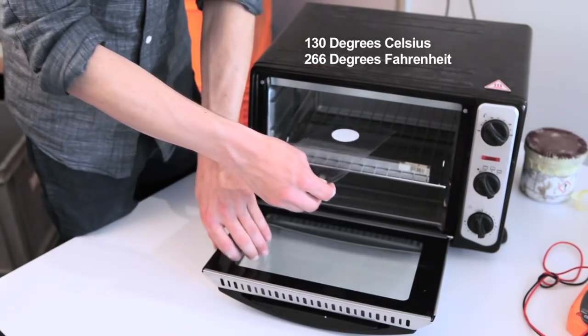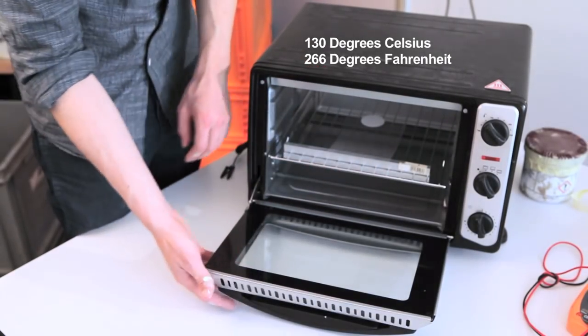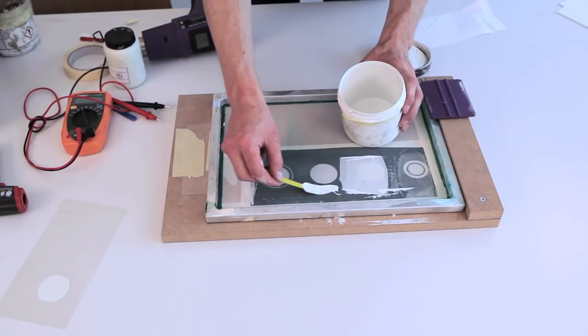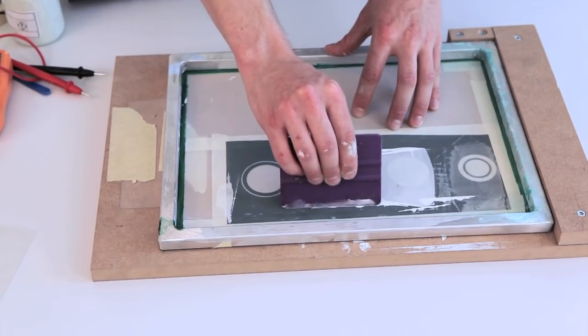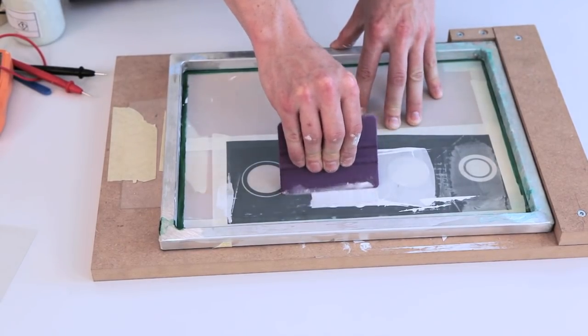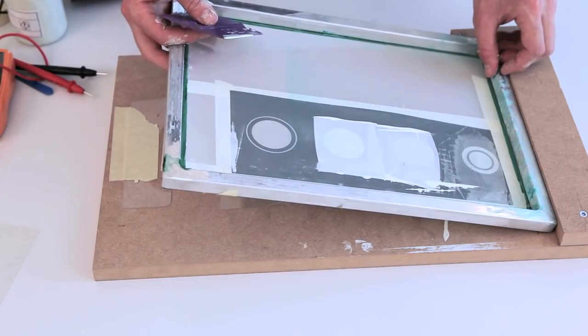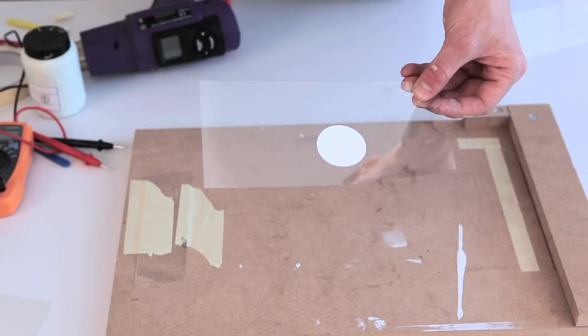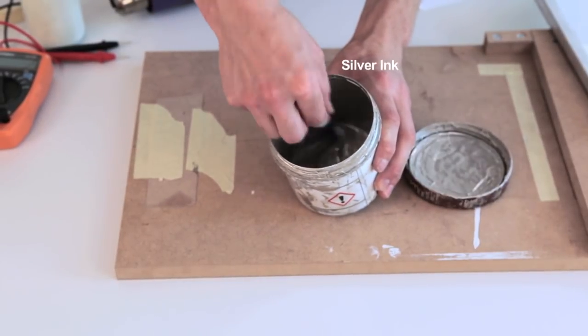We now repeat the process for the dielectric ink. The first screen will be clogged from the dielectric ink, so we'll need to use the second one. Lastly comes the silver layer.